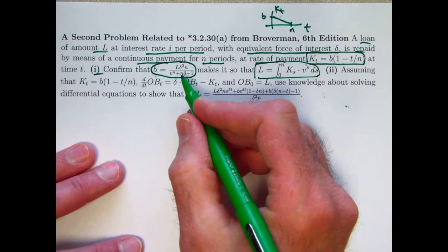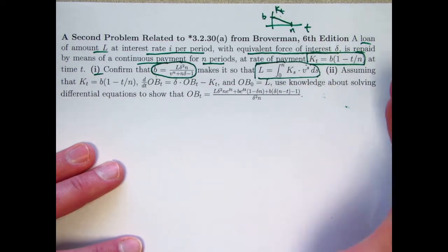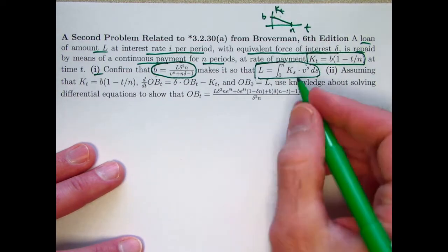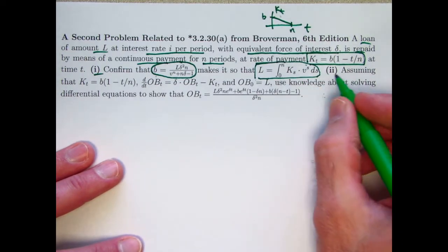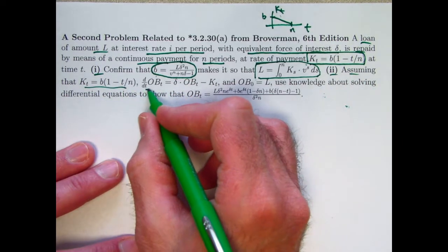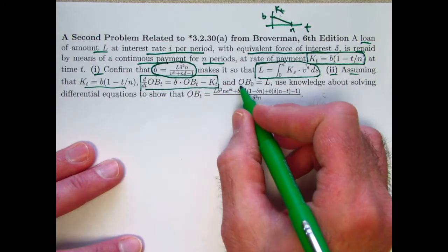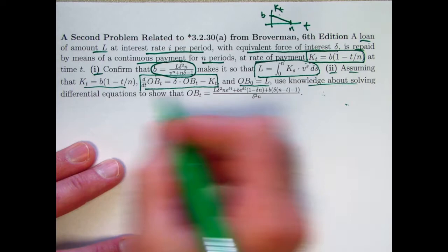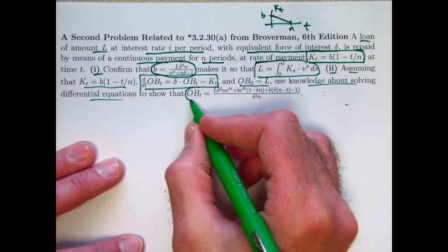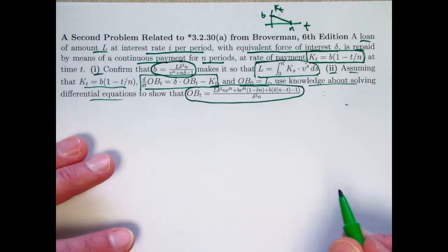Logically speaking, I should do it the other way - plug in b into the integral and show that you get L, but pretending that you don't know what b is ahead of time, it makes more sense that way to do the integral first. Second part, assuming that we've got once again the same rate of payment, we've got that differential equation, just like in the last couple videos with this initial condition. Use knowledge about solving differential equations, again it's going to be integrating factors, to show that the formula for the outstanding balance as a function of time can be written in this way. Pretty complicated.